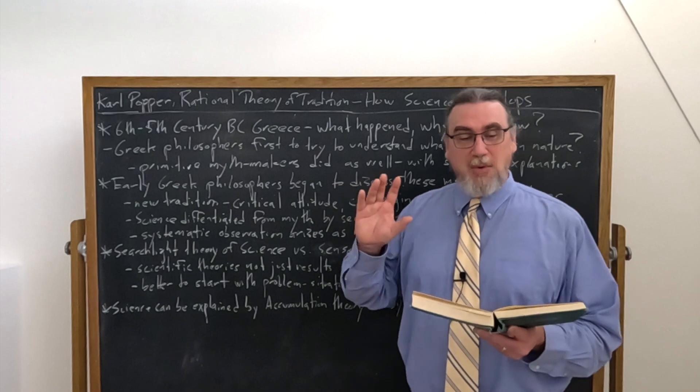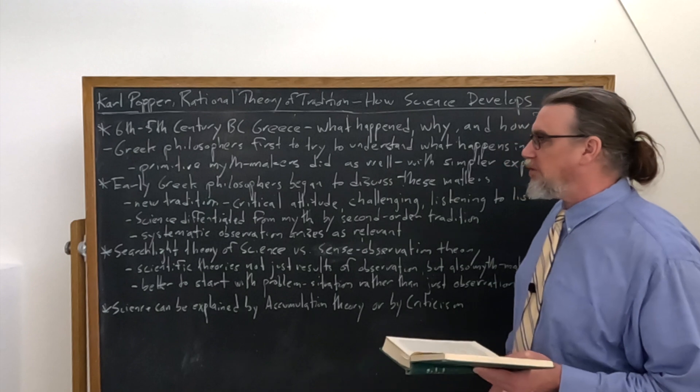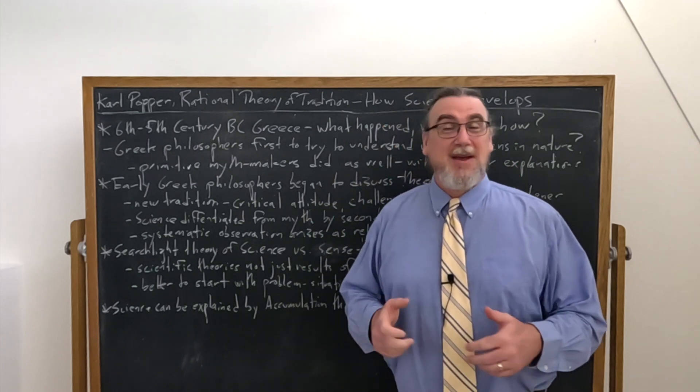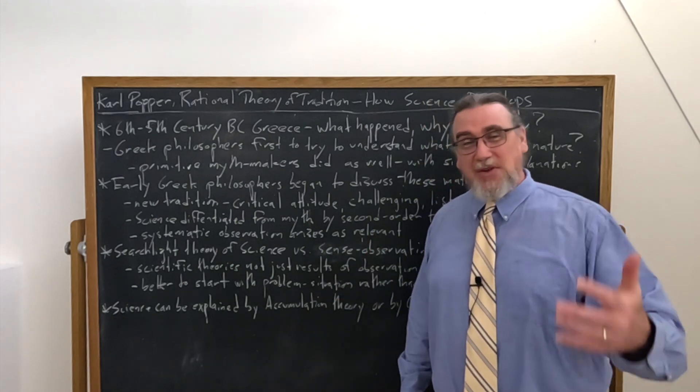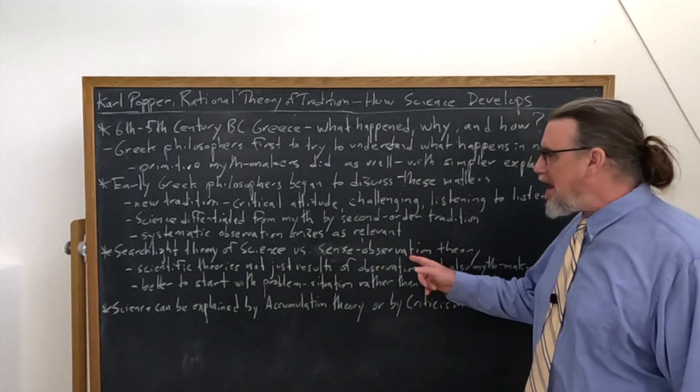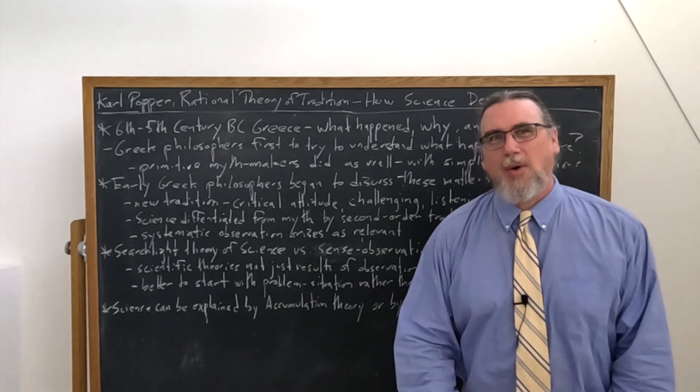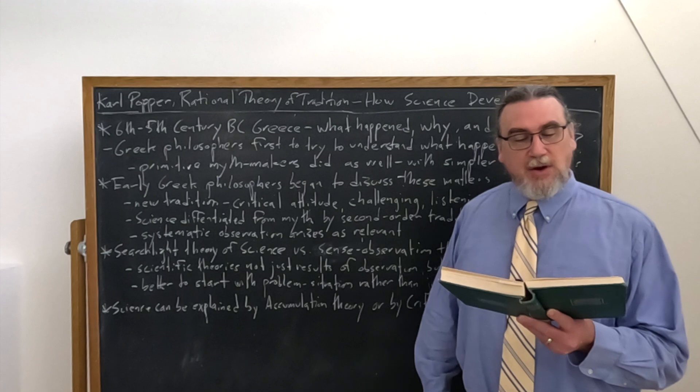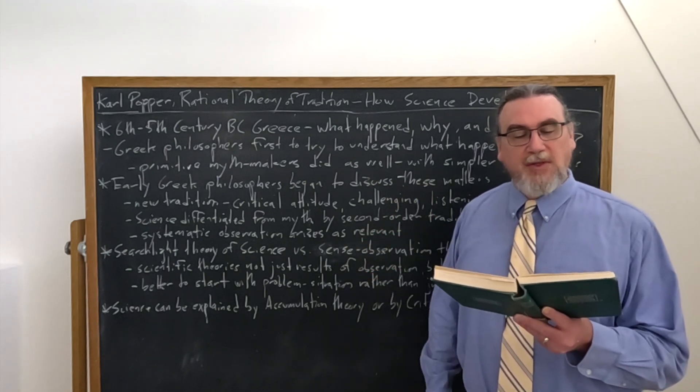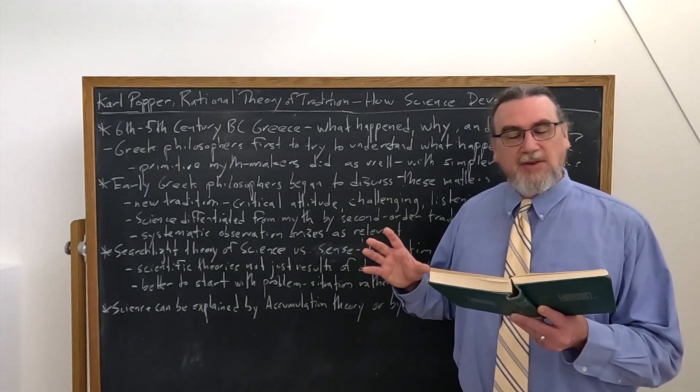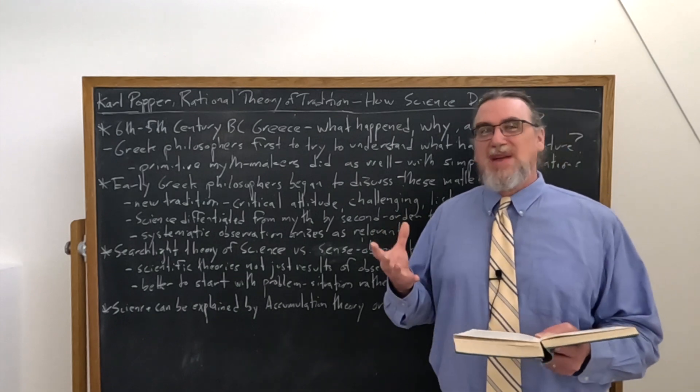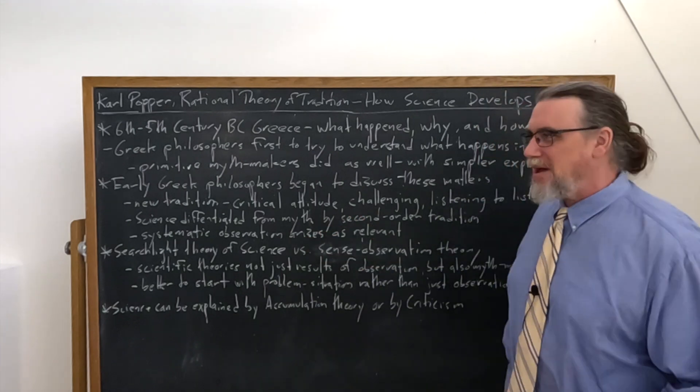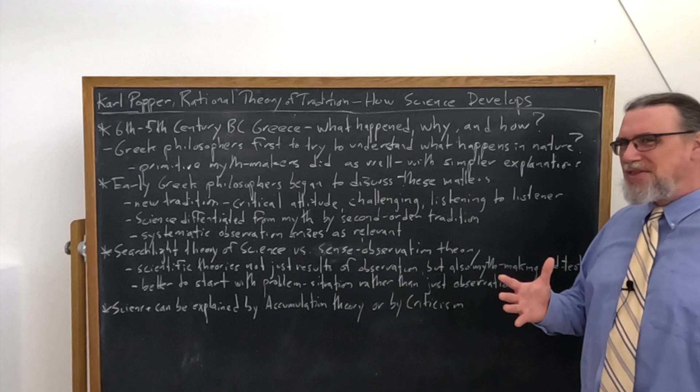Let me repeat this, because this is an important point. Scientific theories are not just the results of observation, which is not to say they don't involve observation. Of course they involve observation, because that's how you test things and go through this iterative process of refining your scientific myths. But they're not just results of observation. They're also the results of what else? Myth-making and tests. Observation's function is not producing theories. It plays its role in rejecting, eliminating, and criticizing theories. It challenges us to produce new myths. Yes, but we have to have myths. And those myths need to be involved with the critical attitude or the second-order tradition that we're talking about here. So you're never going to get completely away from myth in doing science.